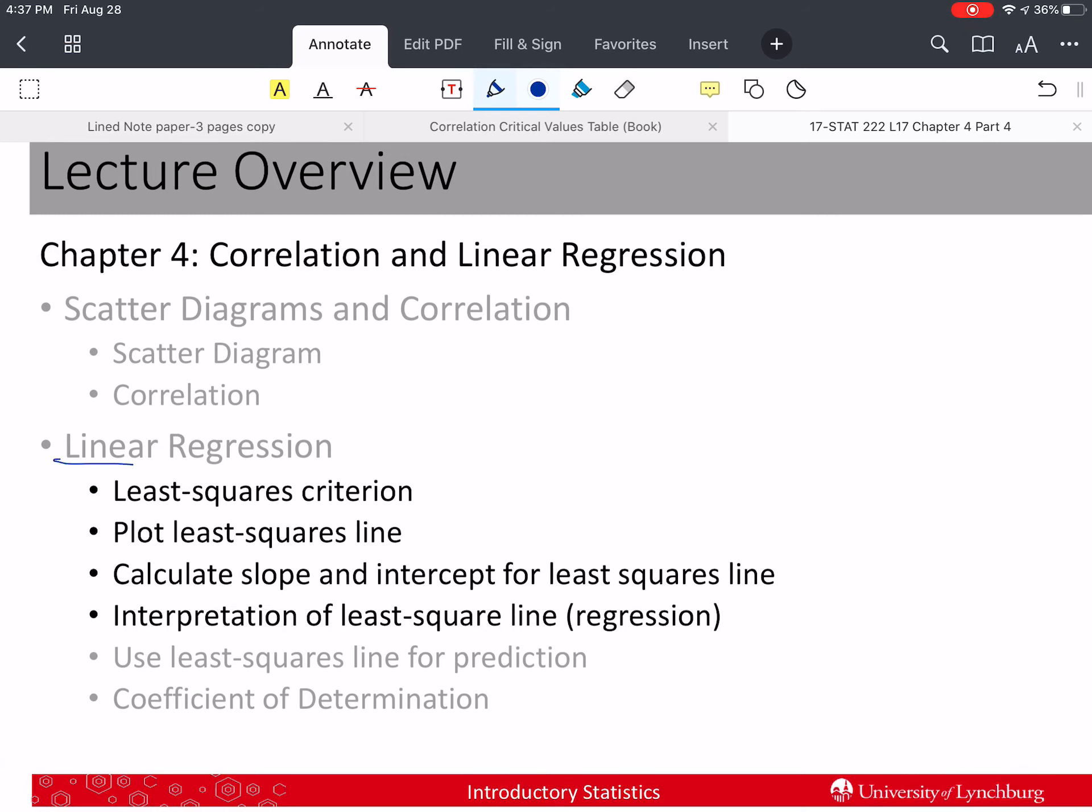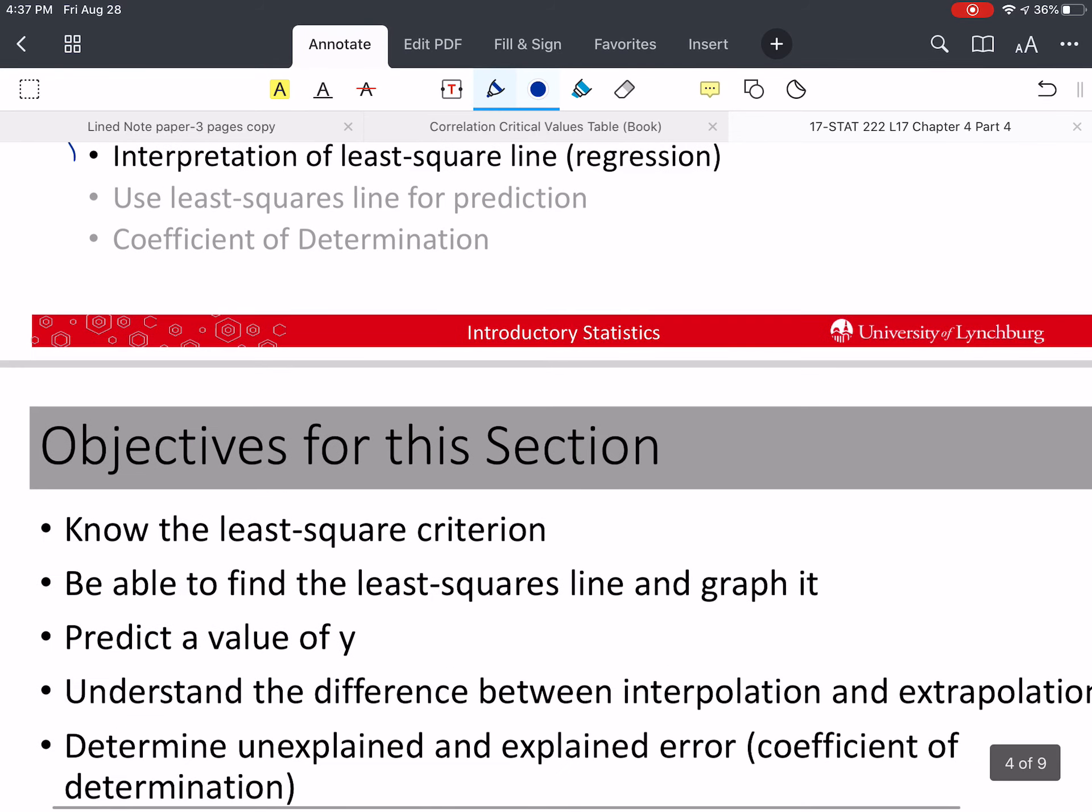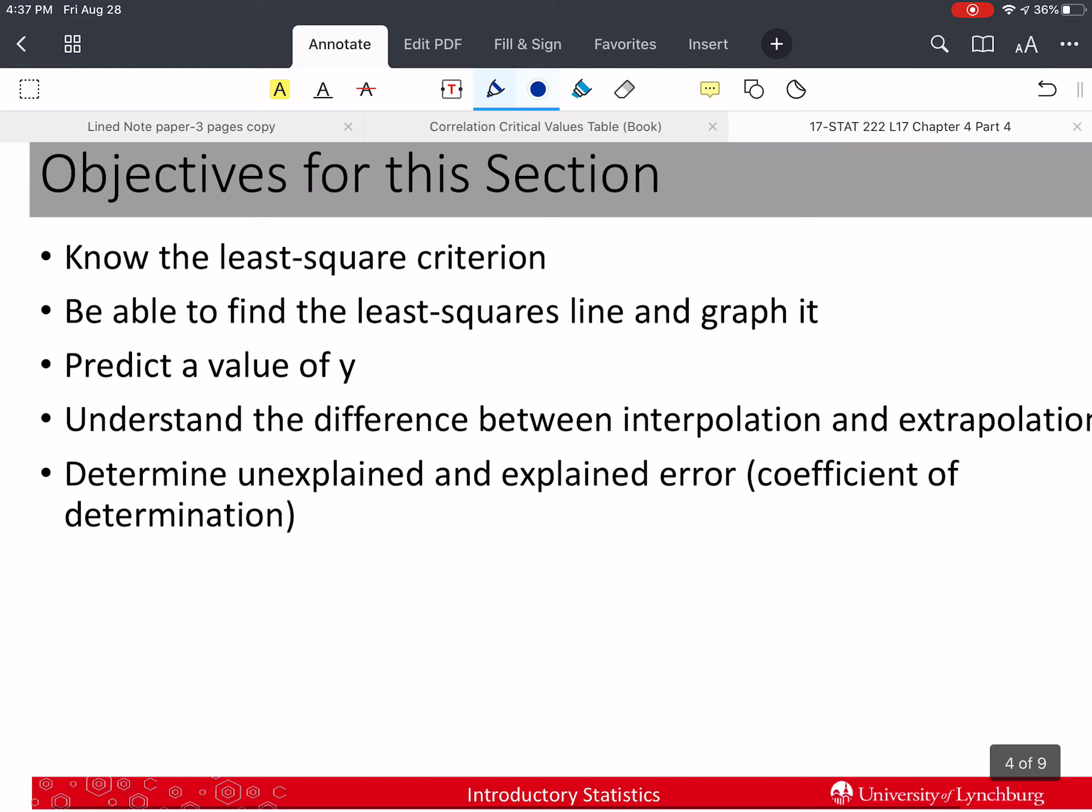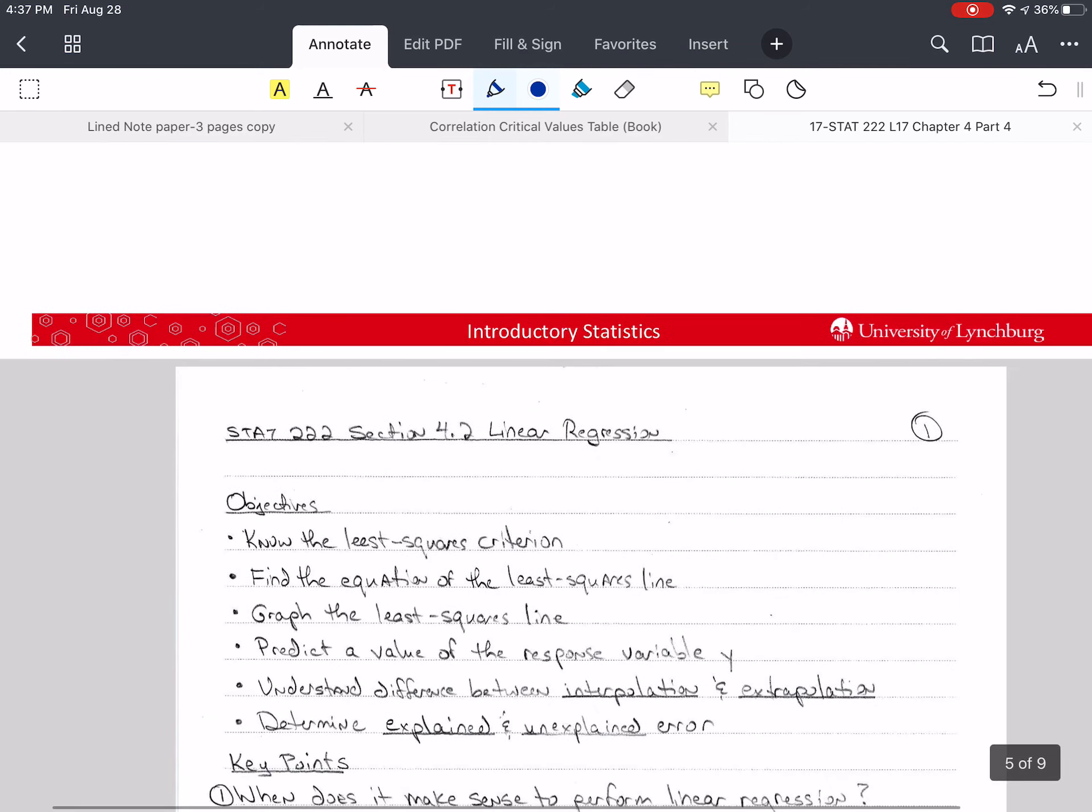In this section we're talking about linear regression, and we're going to talk about least squares criterion, how to plot the least squares line, calculate and interpret the slopes and the intercepts, and interpret the least squares regression line. Those are our objectives.